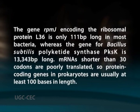There seems to be no strict limits on the length of genes. The gene rpmJ, encoding the ribosomal protein L36, is only 111 base pairs long in most bacteria, whereas the gene for Bacillus subtilis polyketide synthase pksK is 13,343 base pairs long. mRNAs shorter than 30 codons are poorly translated, so protein coding genes in prokaryotes are usually at least 100 bases in length. Open reading frames shorter than 100 bases are rarely taken into consideration.